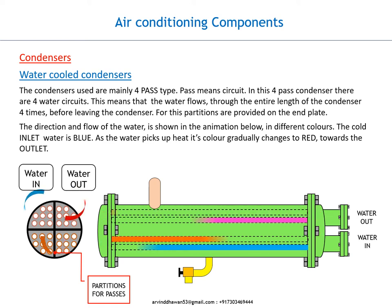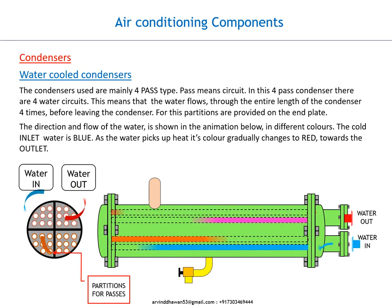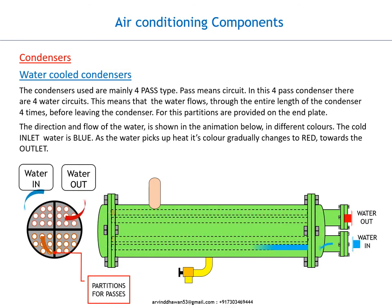The condensers used are mainly four pass type. Pass means circuit. In this four pass condenser there are four water circuits. This means that the water flows through the entire length of the condenser four times before leaving the condenser.